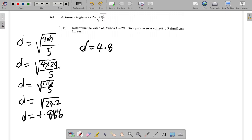6 is 5 or more, so you're going to go back to the 1 and add 1 to it and let it be 2. So D is 4.82 to 3 significant figures.